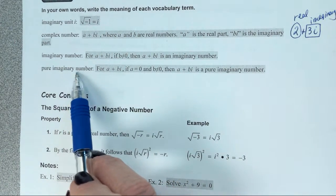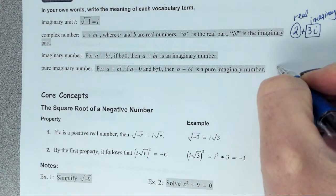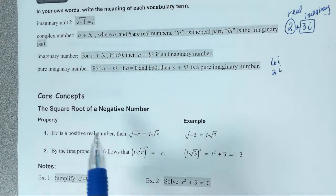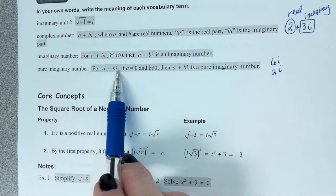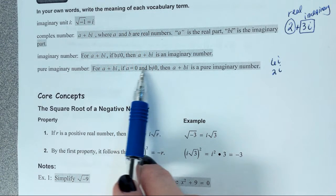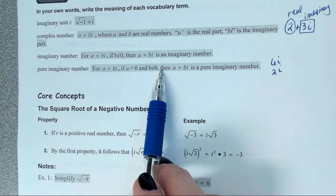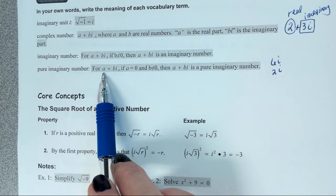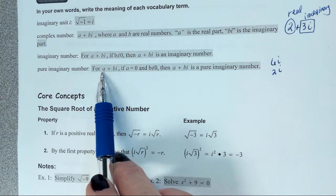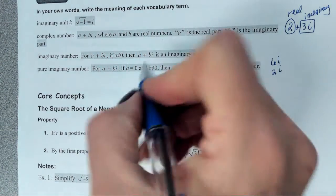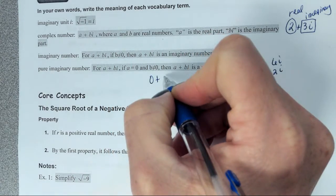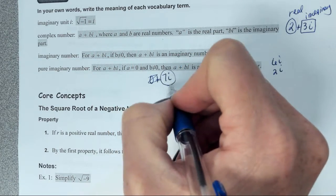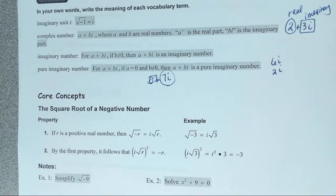A pure imaginary number — let me show you an example. A pure imaginary number is like 6i or 2i. That means if we have A plus Bi, and A equals 0 and B is not equal to 0, then A plus Bi is a pure imaginary number. You do not have a real part because the real part is 0. So if I have 0 plus 7i, that basically becomes just 7i — and that is called a pure imaginary number.